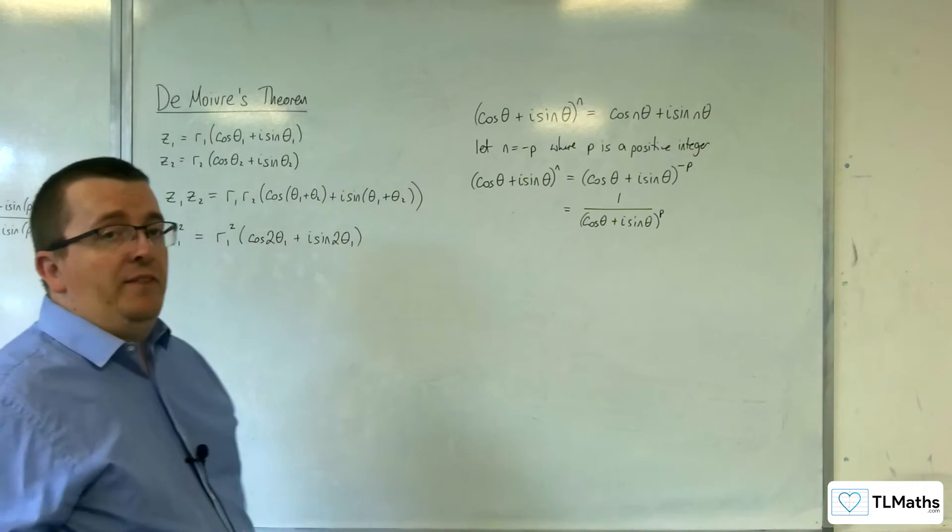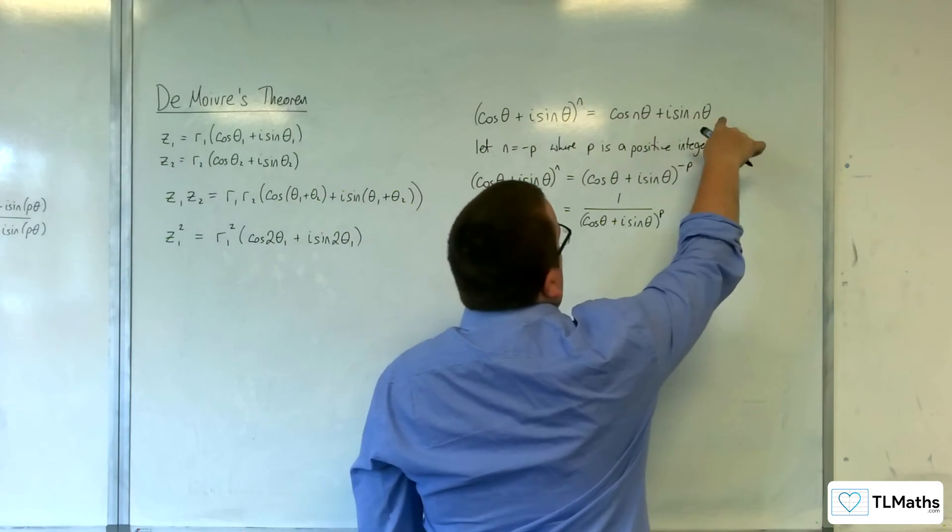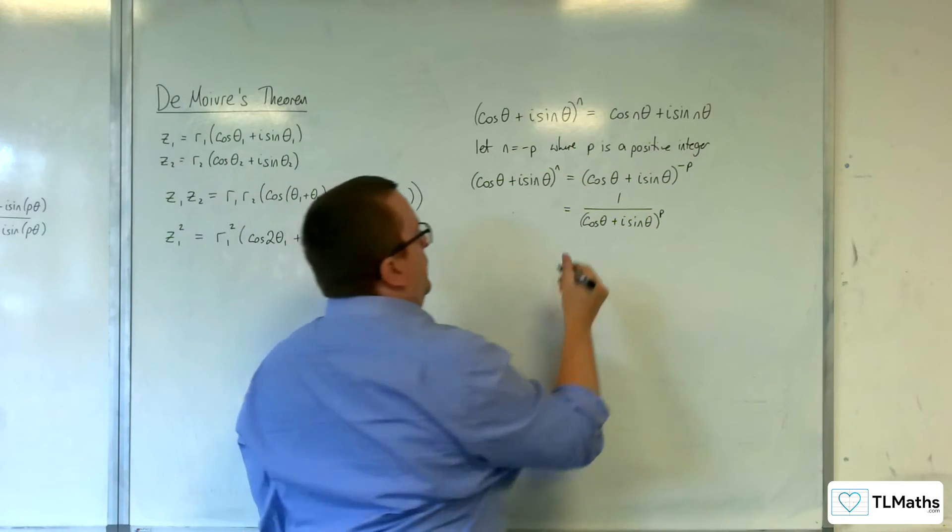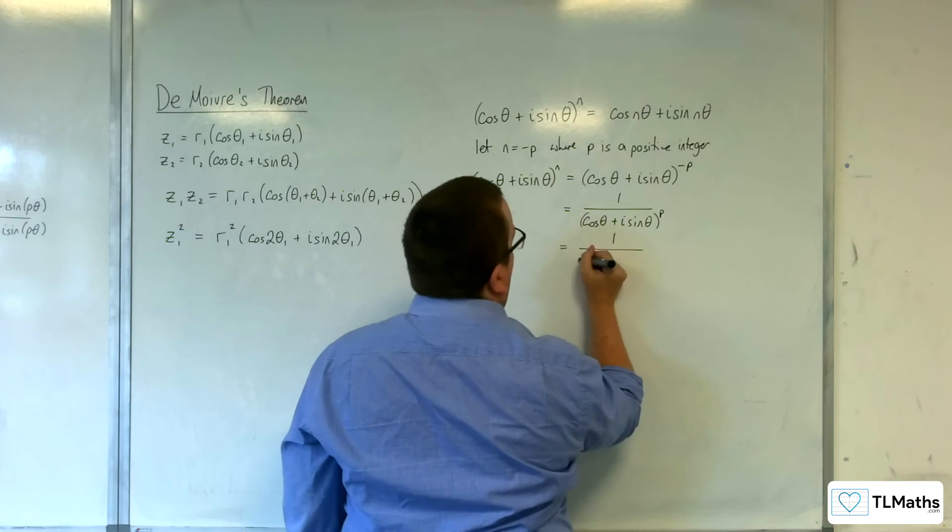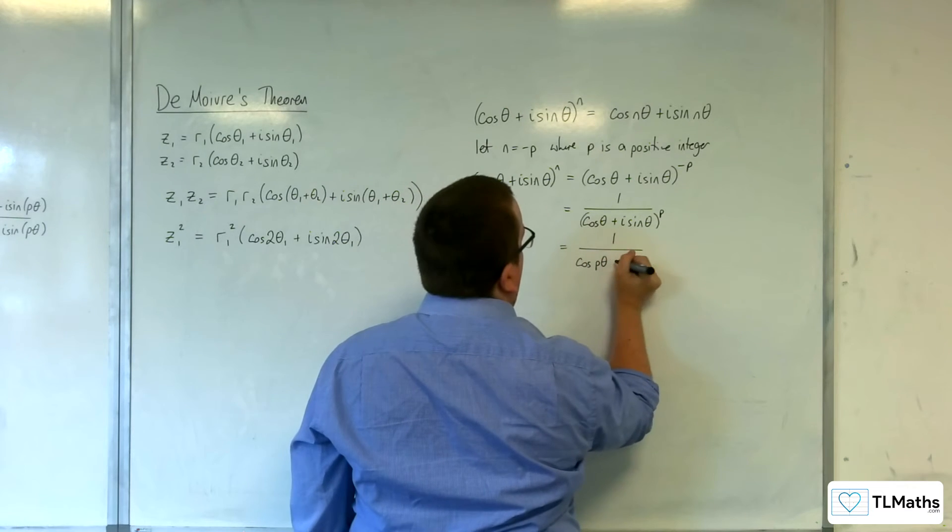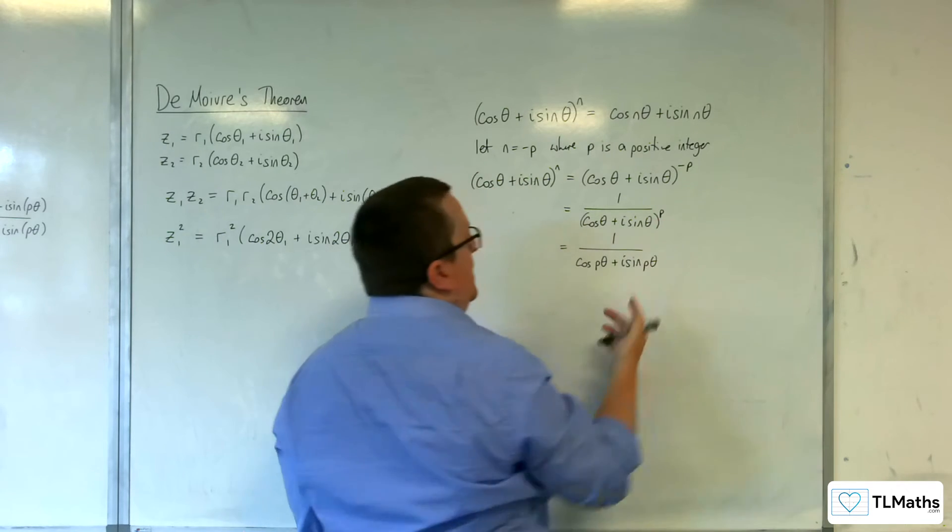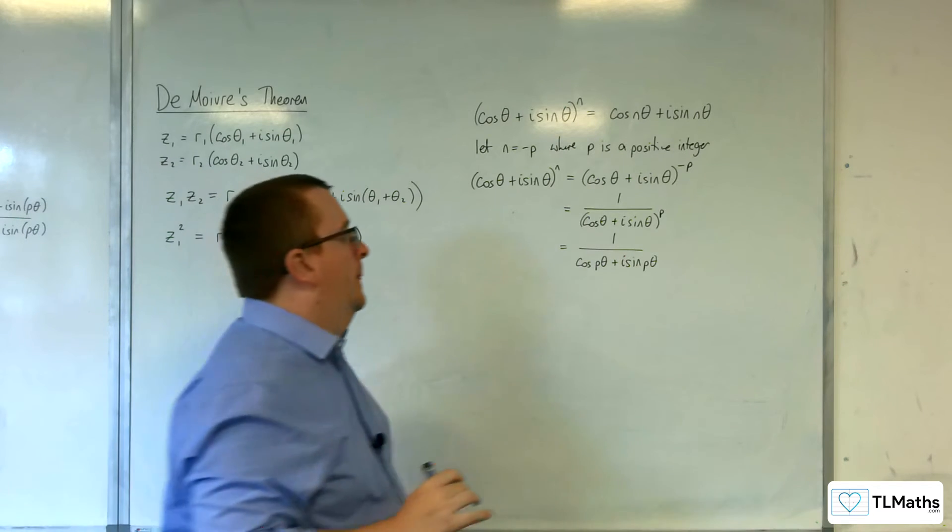But remember, P is a positive integer, and I've proved this for positive values, positive integer values of N. So that means I'm perfectly at liberty to bring that P down and write that as cosine of P theta plus i sine of P theta. Because here, P, remember, is a positive integer. So that's perfectly valid.